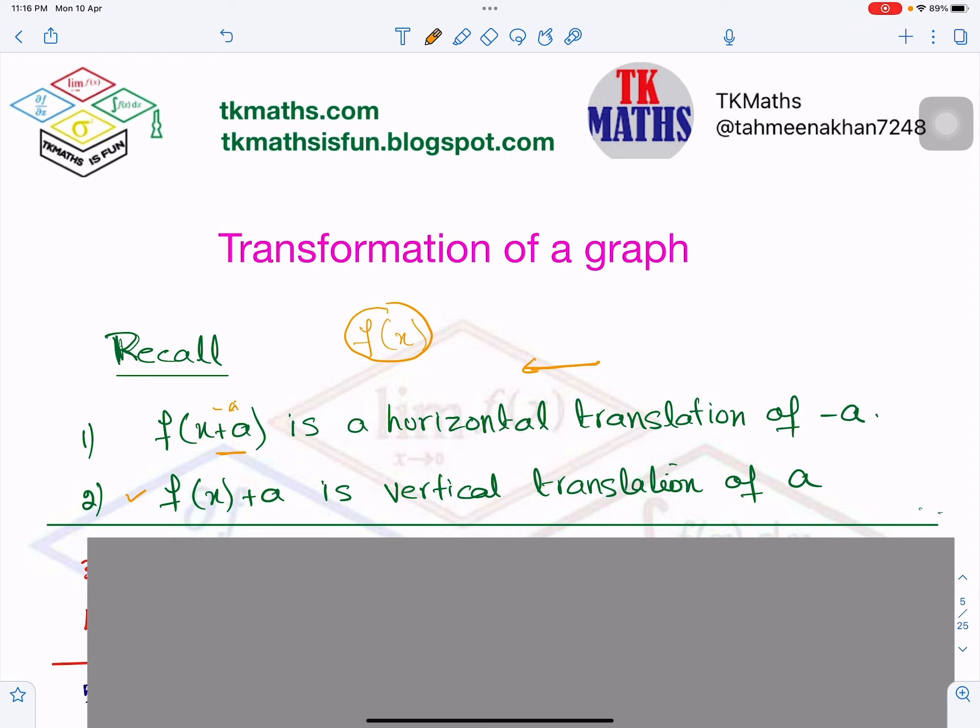If you see this, f(x) plus a, this means vertical movement. If it is plus a, graph will go a units up. If it is minus a, graph will go a units down.